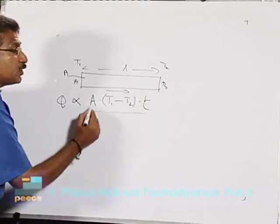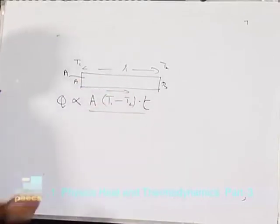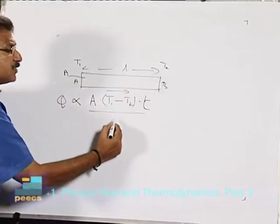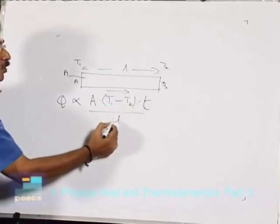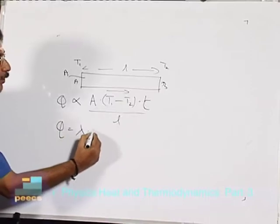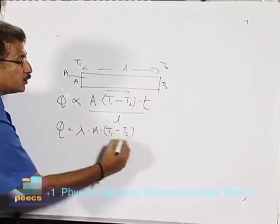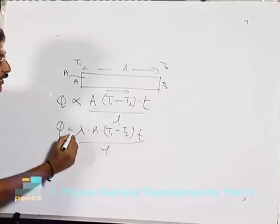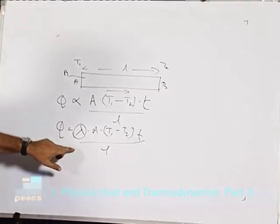Q is inversely proportional to the length L of the rod. So we can write Q = λ·A·(T1 - T2)·t / L, where lambda is the coefficient of thermal conductivity, or simply the thermal conductivity of the material.